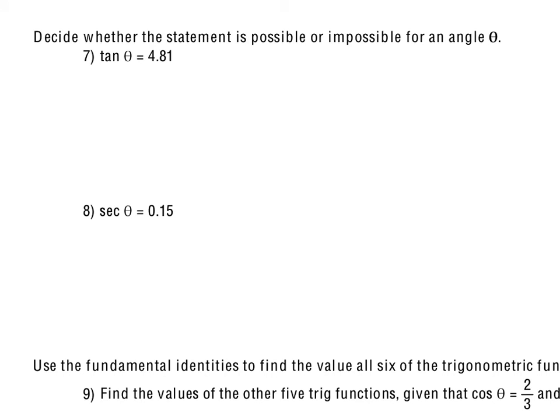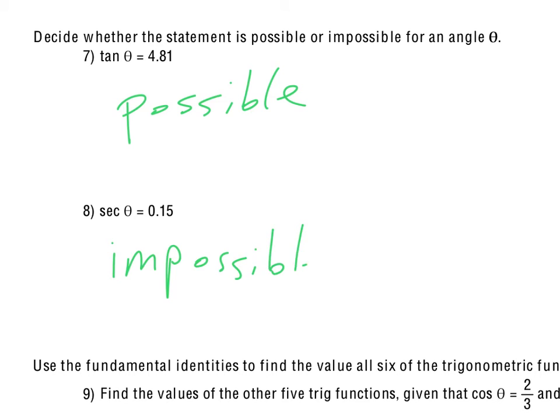For number 7, we determine whether each trig statement is possible or impossible. Tangent of theta: the range for tangent is all real numbers, so any value is certainly possible. Secant of theta, however, has a range outside of negative 1 and 1, so a secant value of 0.15 would be impossible — no matter what theta is, you cannot get secant to equal 0.15.